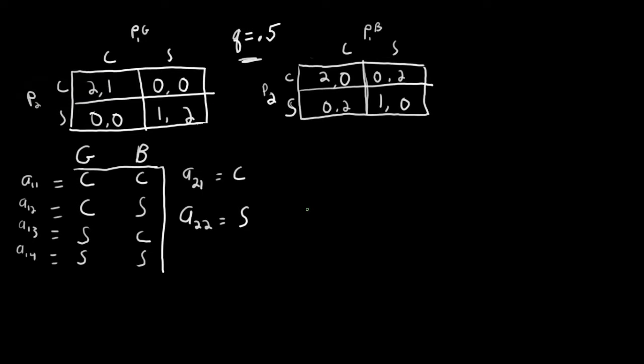In the last lesson, we learned about Bayesian games, or games with uncertainty. What you see on the screen here is just a redrawing of that game. In this game, Player 1 can be one of two types. He can either be a good friend, P1G, or a bad friend, P1B. When he's the good type, his payoffs indicate that he prefers to go to the same place as Player 2 — he gets a positive payoff when they either both go to the concert or they both go to the sporting event.